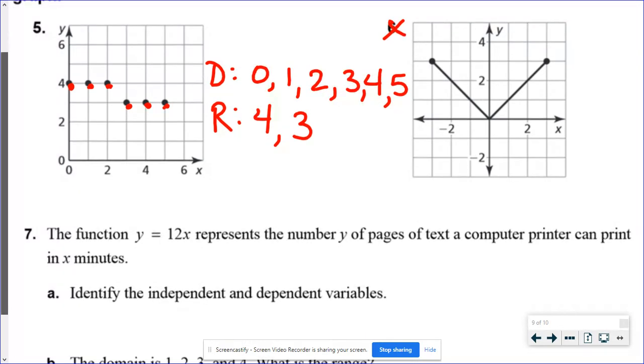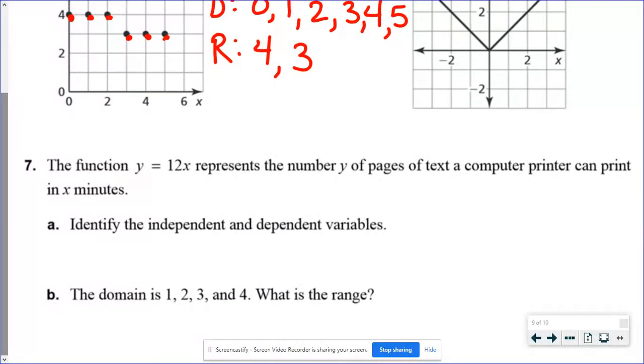For number seven, this says that I've got a function, y equals 12x. That's the number of pages of text that a computer can print in x number of minutes. So this is really saying that every single minute the computer can print 12 pages of paper. So the independent variable, remember the independent variable, that's just going to be the x. And the x is the number of minutes. The dependent variable, that's the y, that's how many pages get printed. The number of pages depends on how long it's printing.